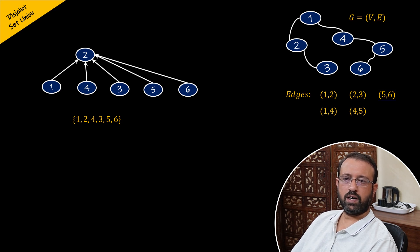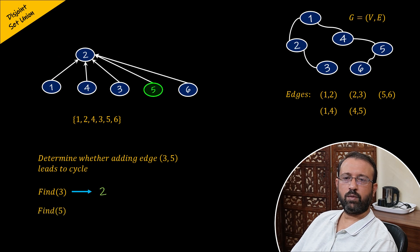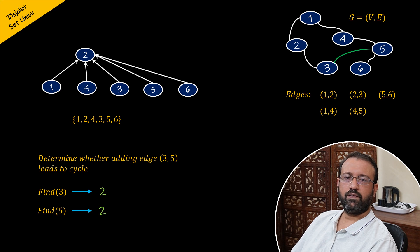We have examined all the vertices of the graph and created the disjoint set, performing the union operation if there is an edge between the vertices and if the vertices are not in the same set. Now let us determine whether adding an edge between vertex three and vertex five will lead to a cycle. We perform find operation on vertex three — its parent is two, which is the root, so find returns two. We perform find operation on vertex five — its parent is also two, which is the root, so find also returns two. Since both vertices have the same parent, they belong to the same set. If there is an edge between vertices that belong to the same set, that means there is a cycle in the graph. So we can say that adding an edge between vertex three and five will lead to a cycle in the graph.